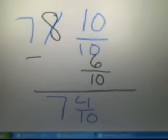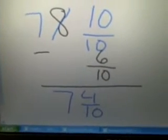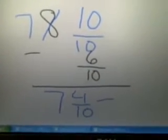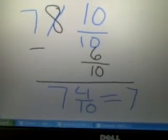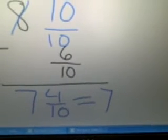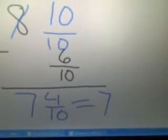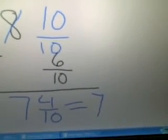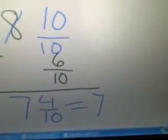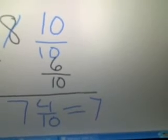These are both even numbers. What's the greatest common factor of four and ten? Two. Two goes into four how many times? Twice. And two goes into ten how many times? Five.